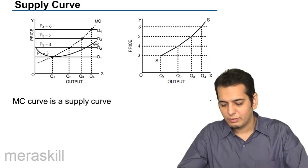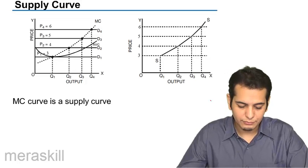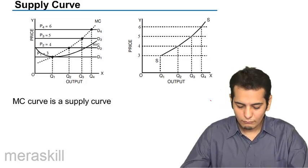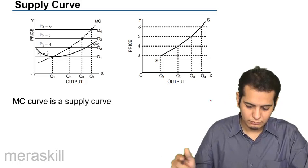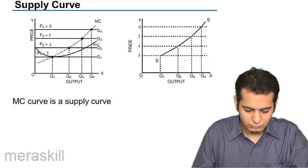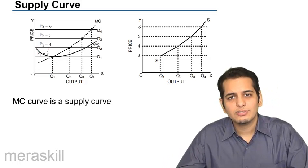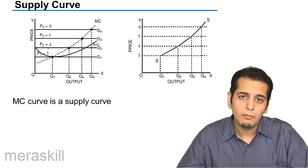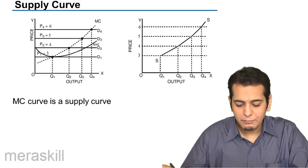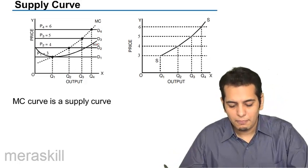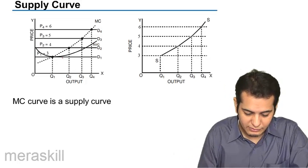We have two graphs before us. Let's first look at the first graph. In our earlier chapter we covered the concepts of average variable cost and marginal cost. We have the average variable cost curve placed on the first graph.